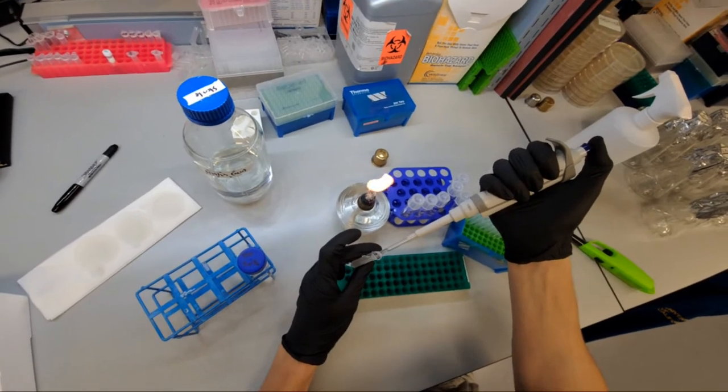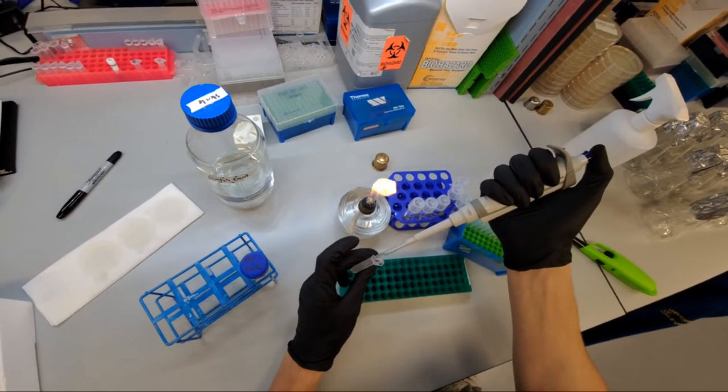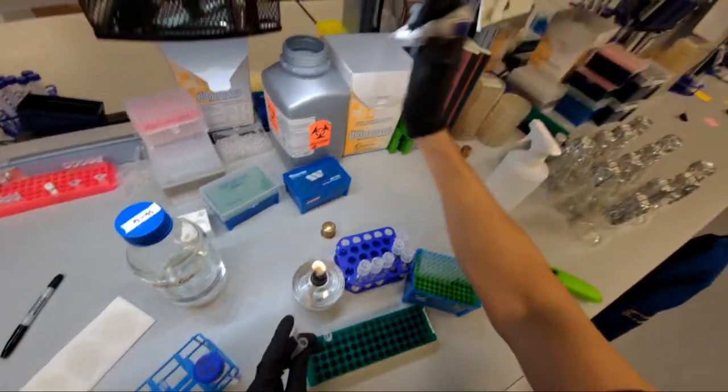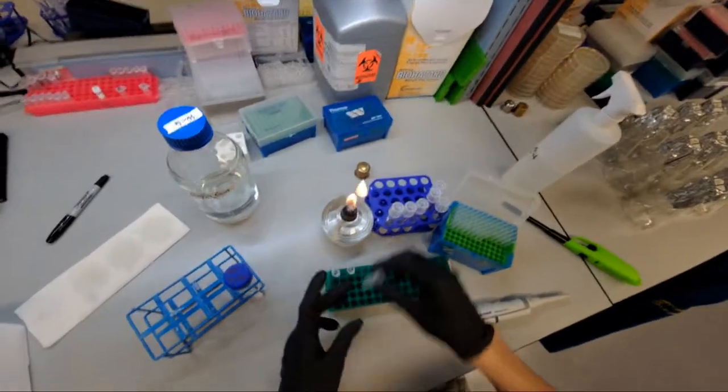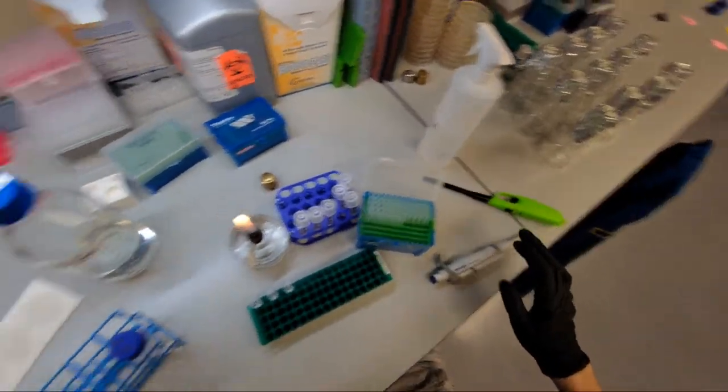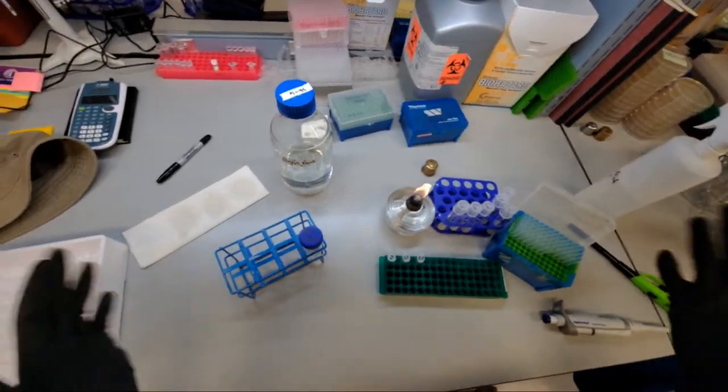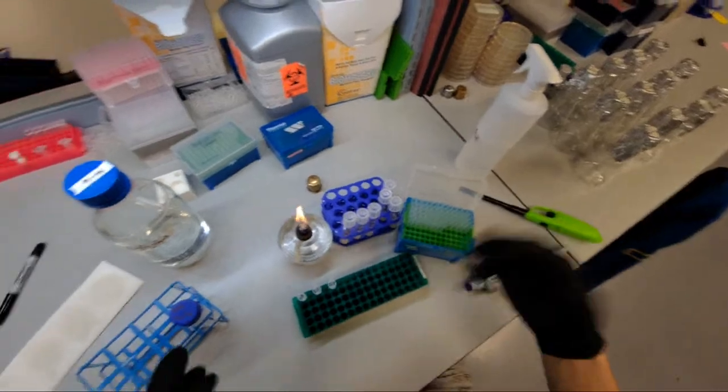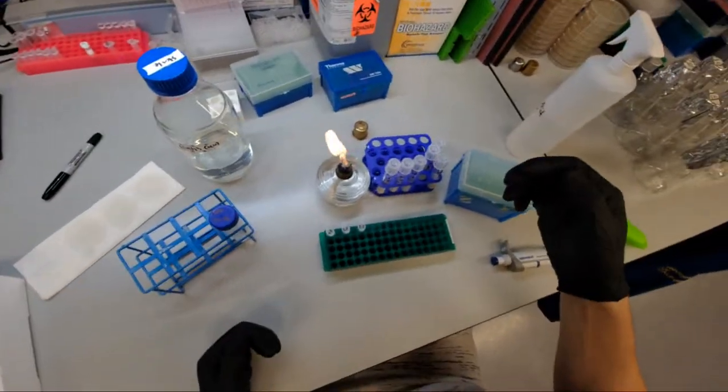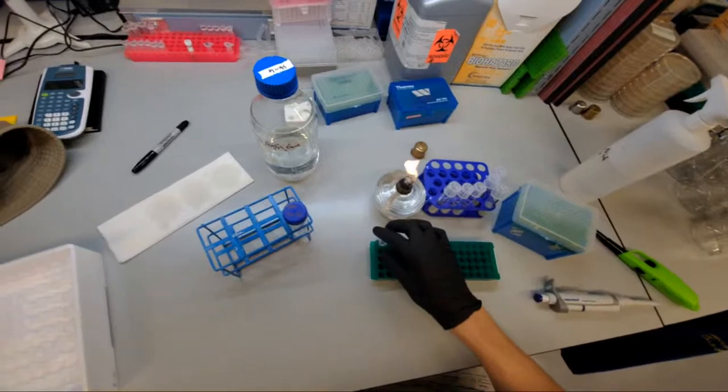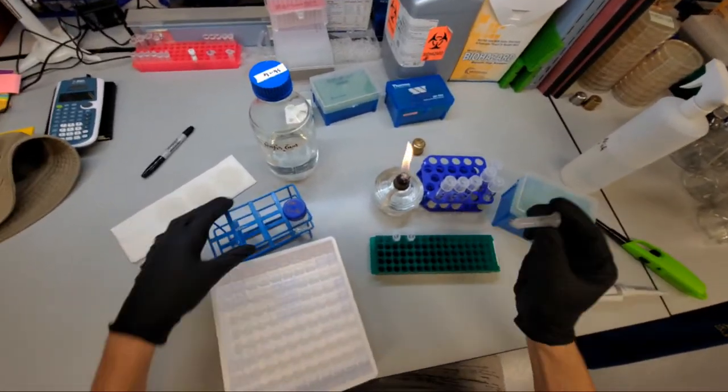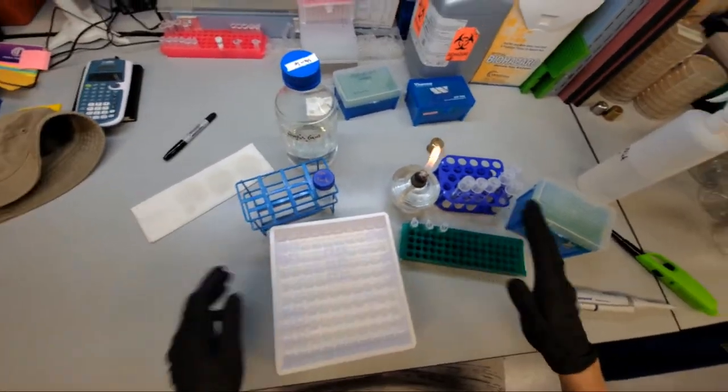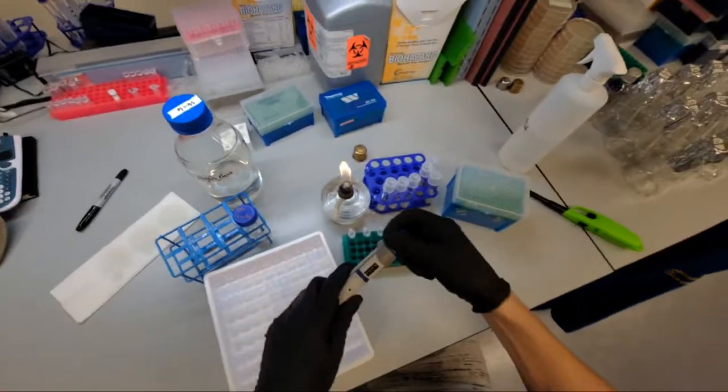So I spun these cells down at 4000 G for two minutes. So a G is 9.8 meters per second squared. So 4000 G is 4000 times Earth's gravity in a centrifuge, which is enough to pellet the cells, but not enough to hurt the cells. Now we need to know exactly how many cells are in this tube. And we're going to use optical density to measure that.